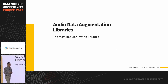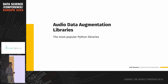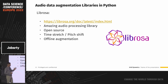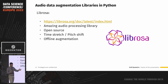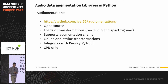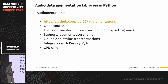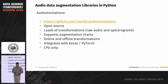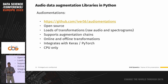Let's mention some of the most popular Python libraries for audio data augmentation. Librosa is an open-source library widely used in audio signal processing. It supports simple augmentation techniques like time stretching and pitch shifting, but only offline augmentation. Audiomentations is an open-source library that supports a large number of transformations, augmentation chains, both online and offline transformations, and integrates with Keras and PyTorch — its only weakness is that it supports only CPU.